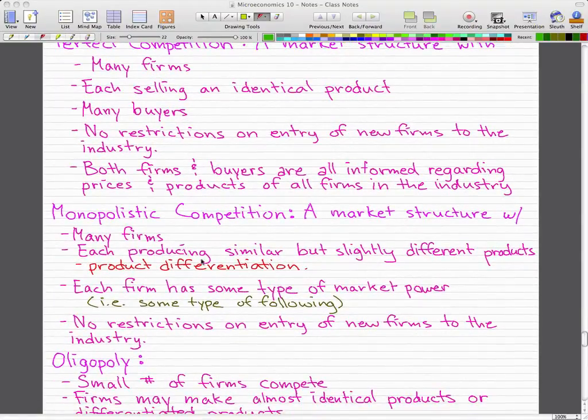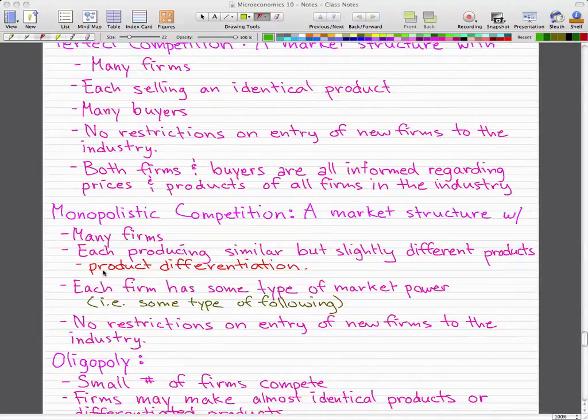So next, monopolistic competition is a market structure with many firms. Each firm produces a similar but slightly different product. This is what we call product differentiation. Each firm has some type of market power,